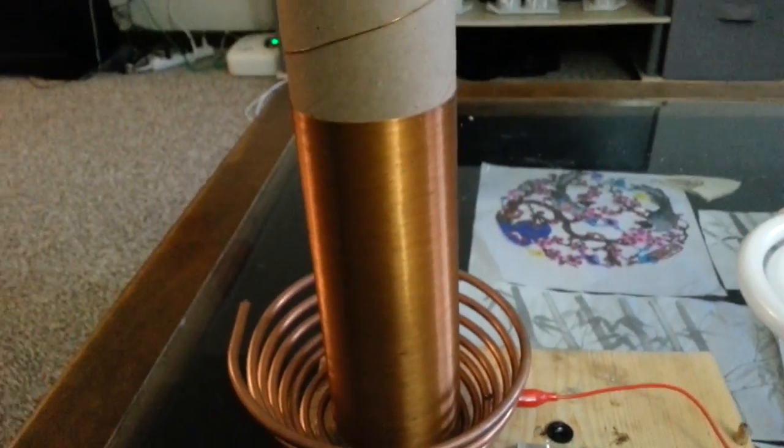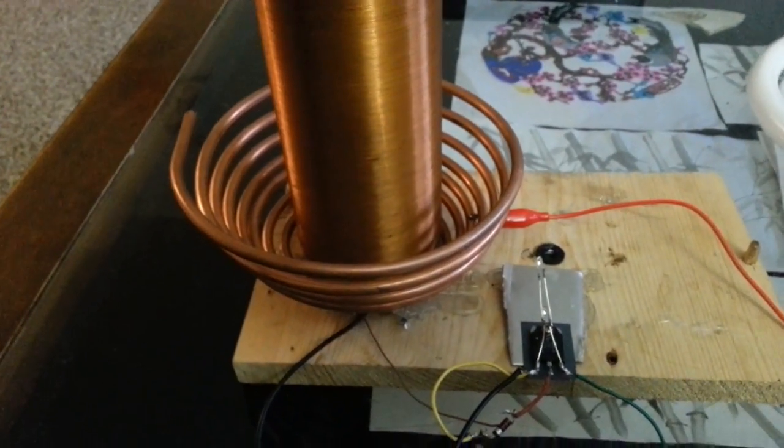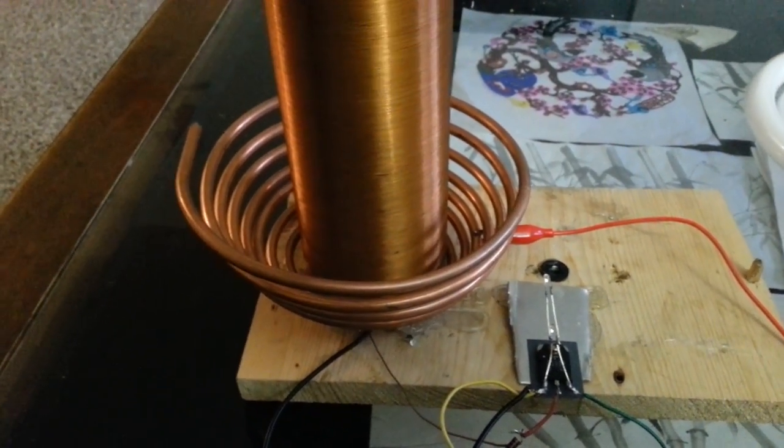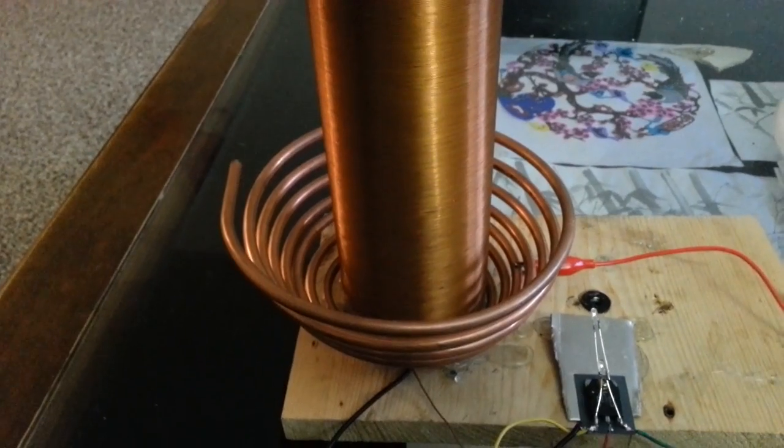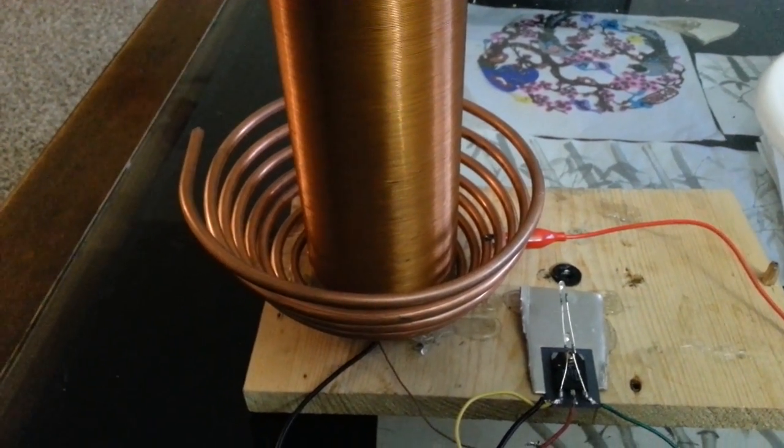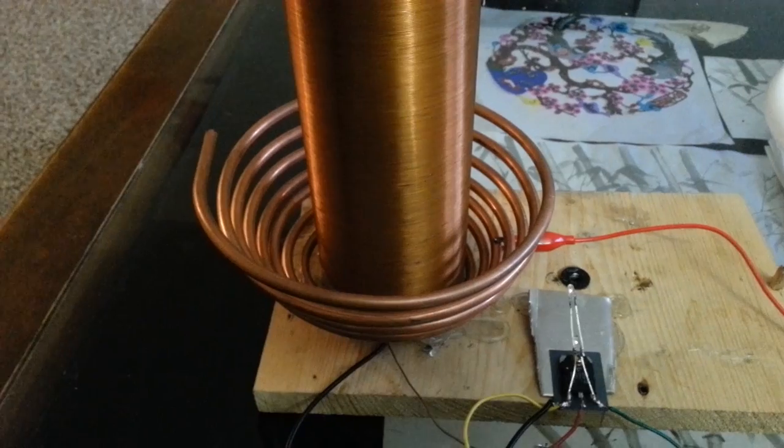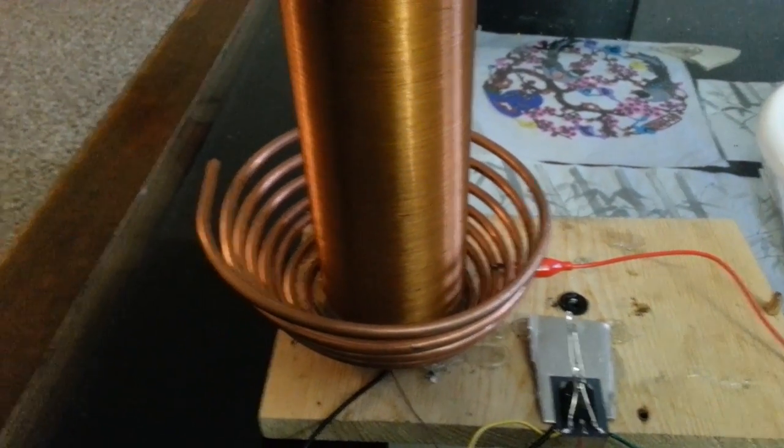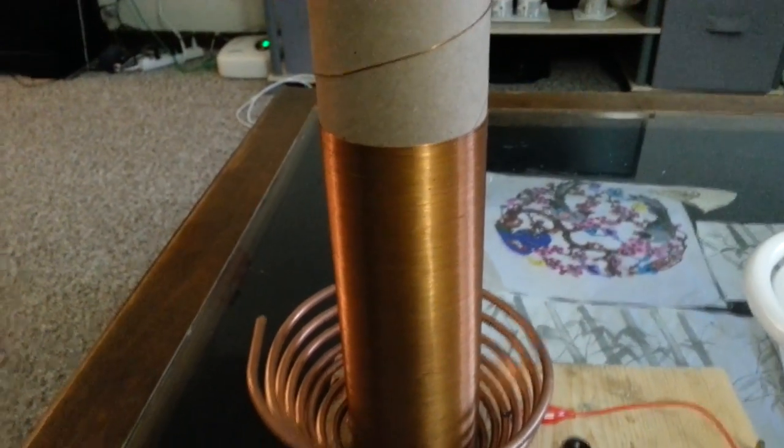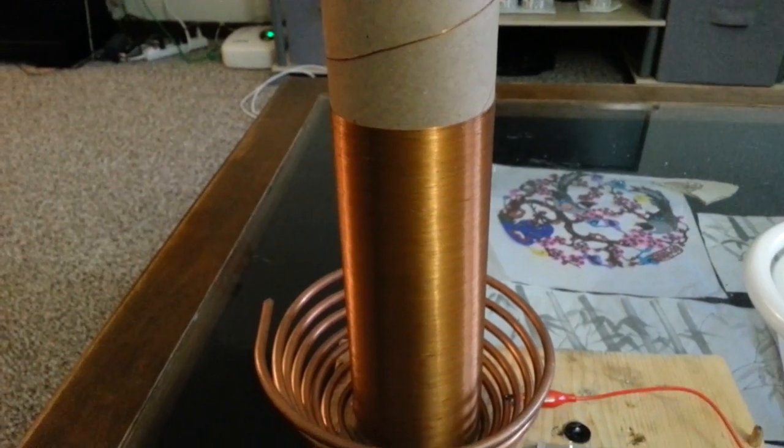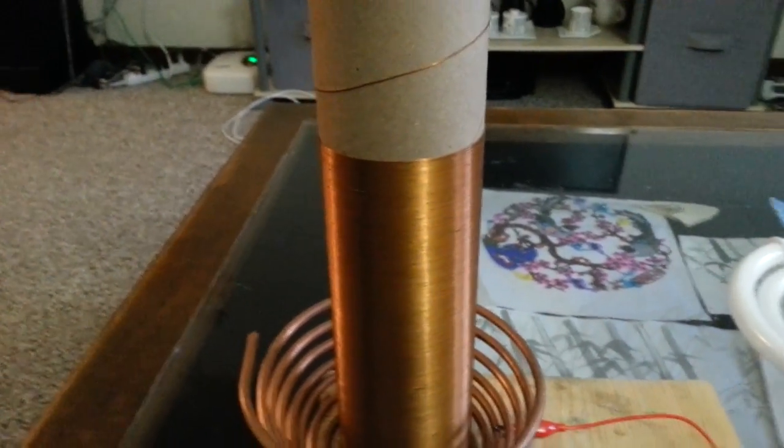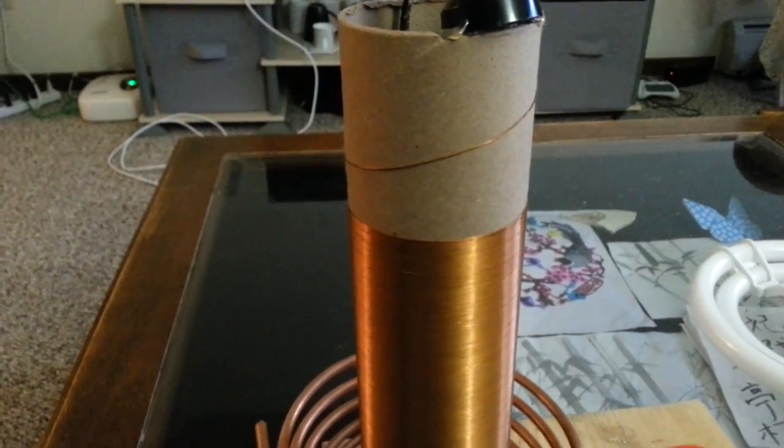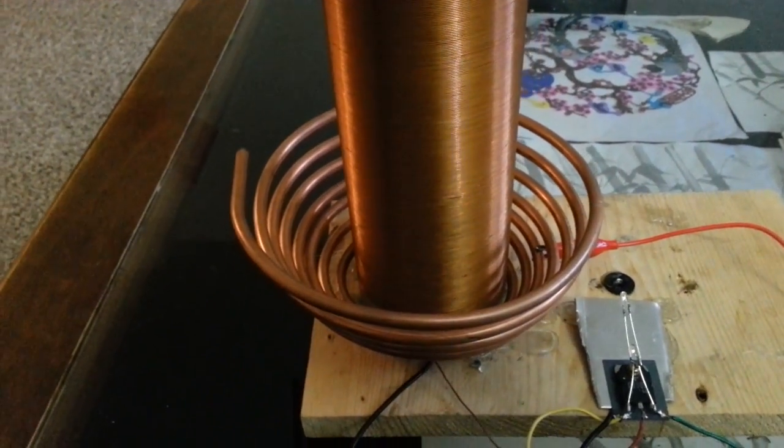This is just a simple Tesla coil, some copper tubing from any hardware store. I didn't have to cut it or anything, it was already pretty much in this shape. I just made it into a cone styled Tesla coil. Secondary coil is just some scrap wire that I salvaged from a TV. I wound on that one counter clockwise and the primary is clockwise.